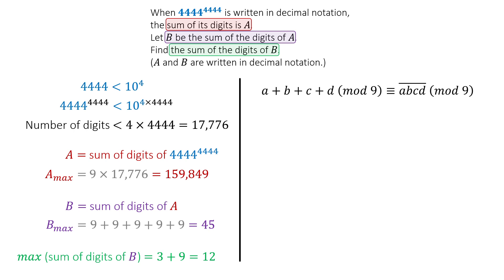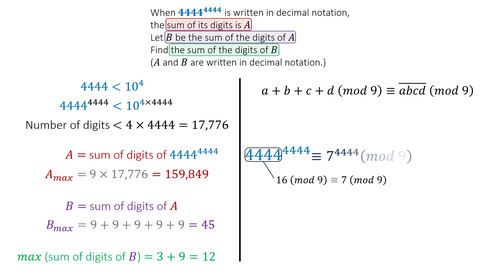It's time to shrink this massive number down to something we can handle. Let's begin with 4,444 mod 9. Adding the digits, we get 16, and 1 plus 6 is 7. This gigantic number is therefore equivalent to 7 to the power of 4,444, mod 9.